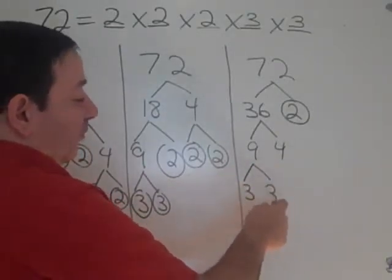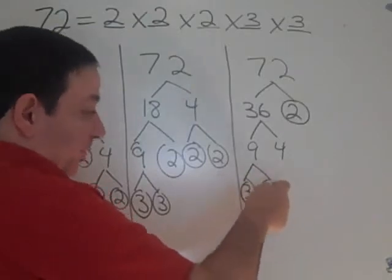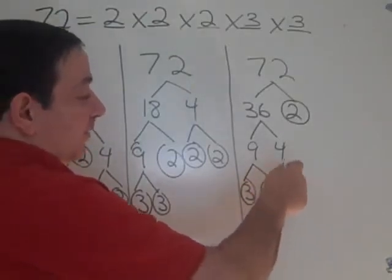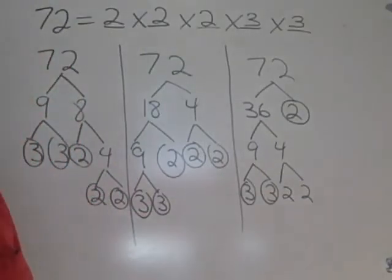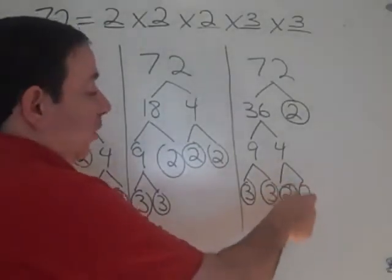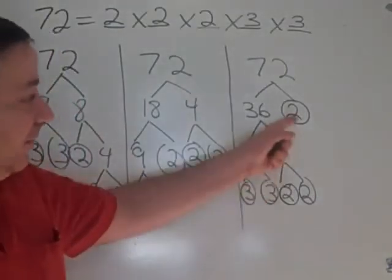9 is not prime. 9 becomes 3 times 3. And the 3's are prime. 4 is not prime. You could think of 4 as 2 times 2. And the 2's are prime.